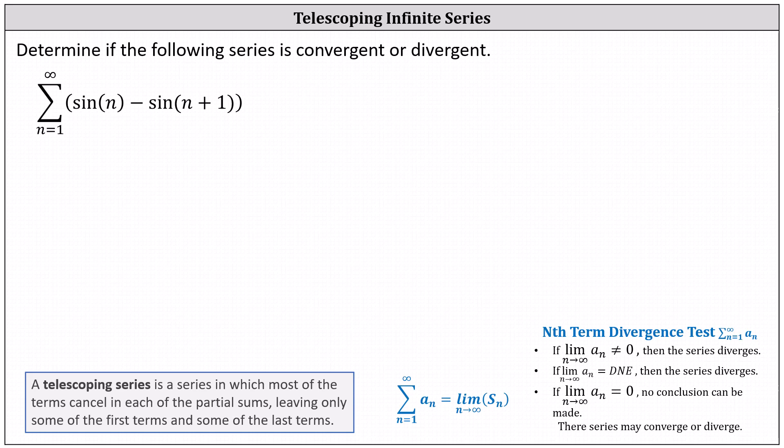This is an example of a telescoping series. A telescoping series is a series in which most of the terms simplify out or cancel in each of the partial sums, leaving only some of the first terms and some of the last terms.